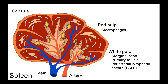The spleen is the largest lymphatic organ, about the size of a fist, sitting roughly around the stomach region. It has two main functions: firstly, to remove old red blood cells from circulation, which occurs in the red pulp region; and secondly, to filter pathogens and immune complexes from the blood, which mainly occurs in the white pulp. Unlike lymph nodes, the spleen filters only blood, not lymph. It holds an important reserve of monocytes, red blood cells, and platelets. Pathogens circulating in the blood are destroyed by macrophages resident in the red pulp.